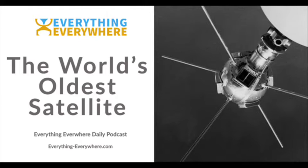It turns out the fourth satellite ever put in orbit is still there, 62 years after it was launched. Learn more about Vanguard 1, the world's oldest satellite, on this episode of Everything Everywhere Daily.